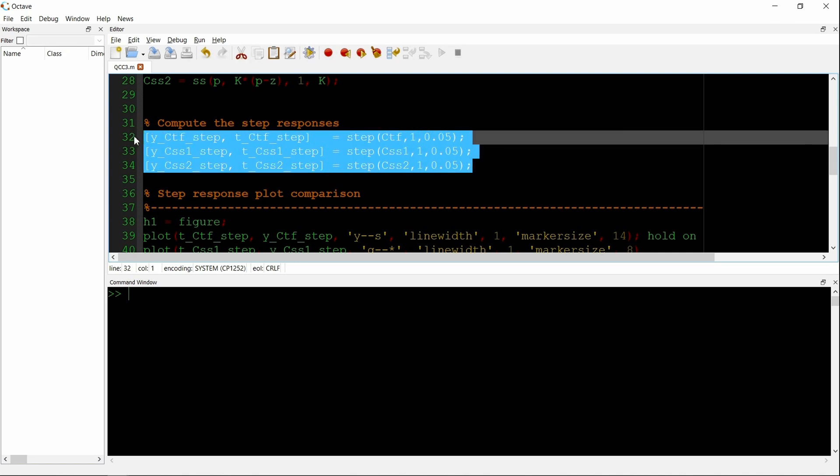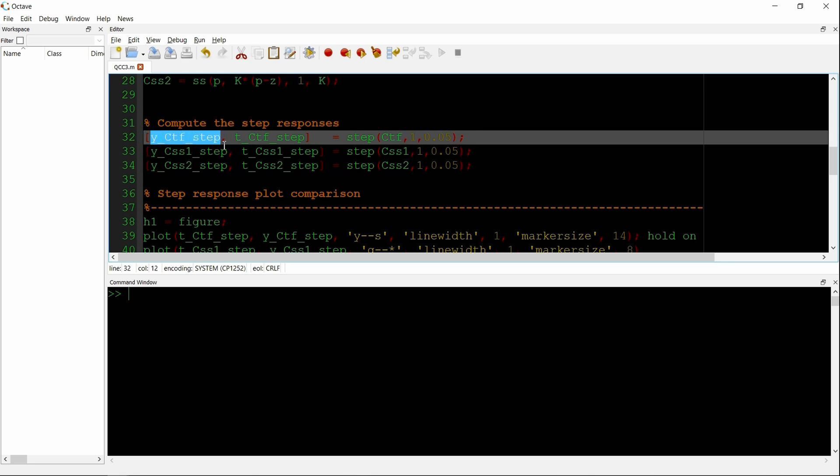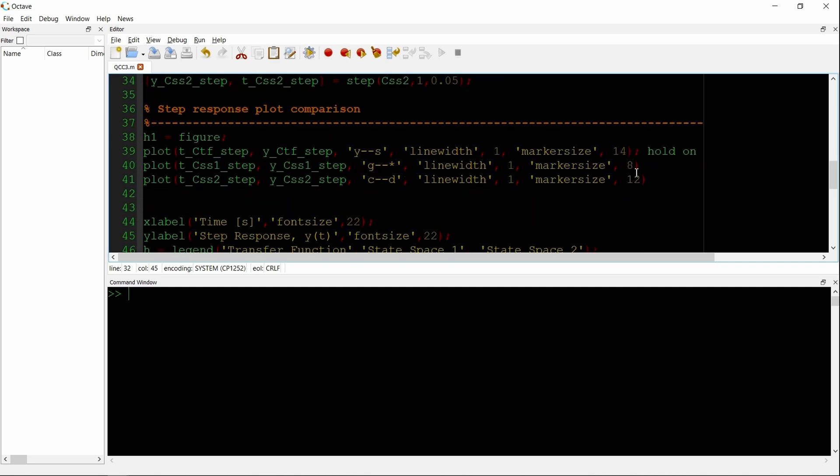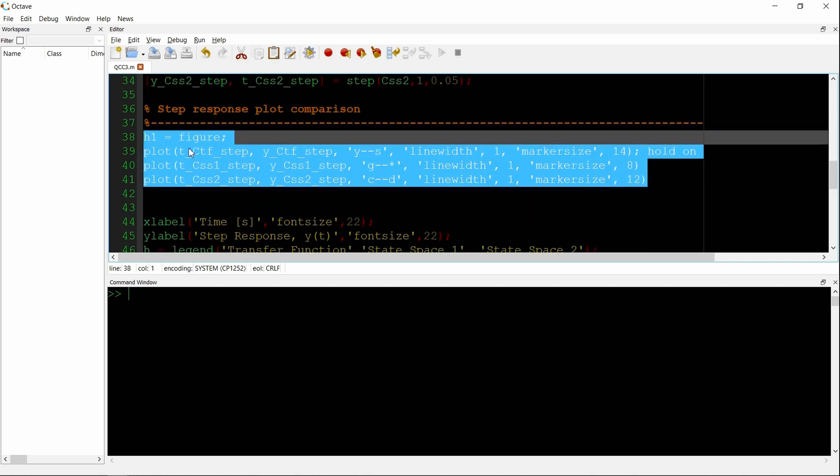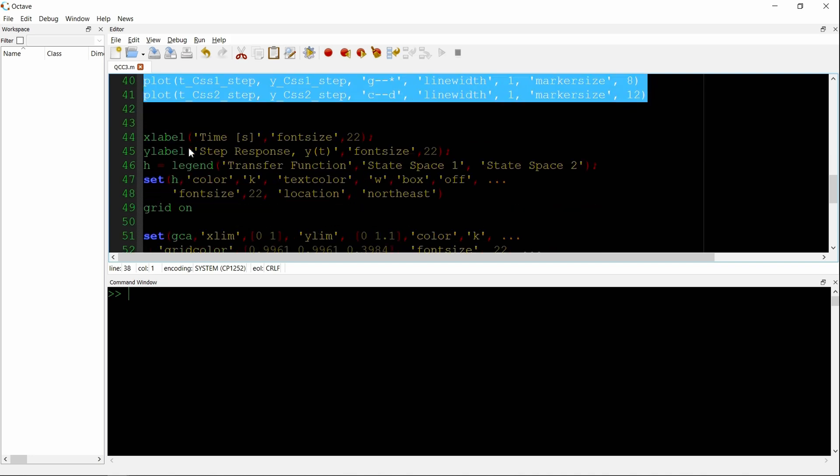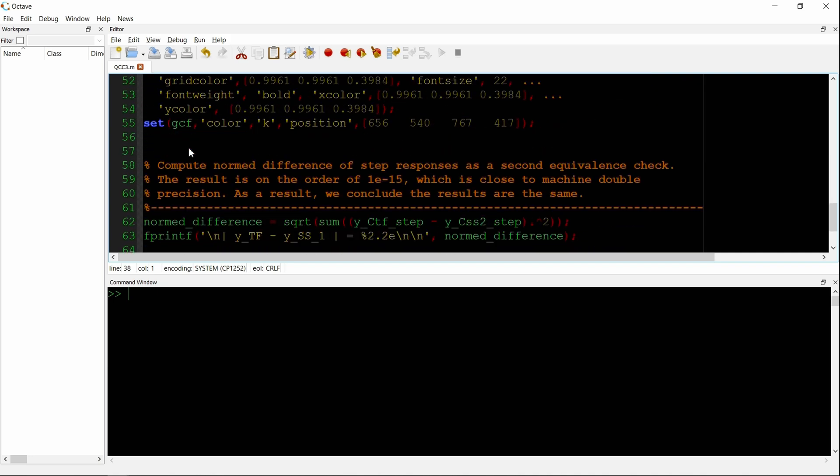And then we use step to compute the step response of each system. The output of step is the response Y and the time vector T. The input to step is the system, whether it's a transfer function or state-space object. One is the final time. And 0.05 is the resolution that the data will come out in. So everything in steps of 1/20th of a step.